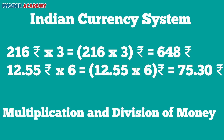Let's multiply 12 rupees 55 paisae by 6. First, we will get 7530. Then we put a dot after 2 places from the right. We get 75.30. So the product is 75 rupees 30 paisae.